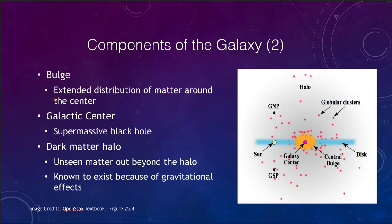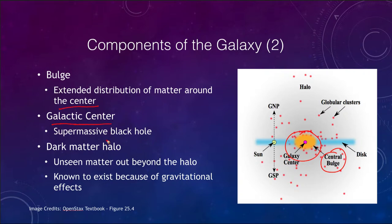There is also the central bulge of the galaxy, noted here. It is an area in between the disk and the halo — the disk is very flattened, the bulge is extended a little bit, and the halo is the big spherical area around it. This is an extended distribution of material around the center of our galaxy. The galactic center itself contains a supermassive black hole of about four million solar masses — four million times the mass of our sun.